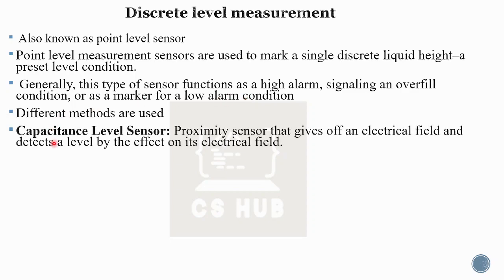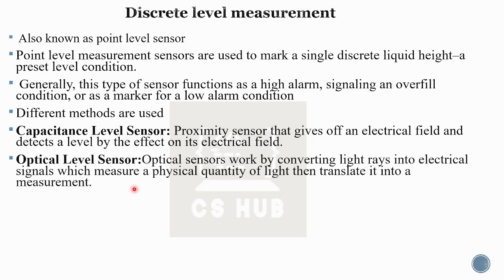For discrete measurement we can use capacitance level sensors, proximity sensors that give off an electric field and detect a level by the effects on that electrical field, and optical level sensors that convert light rays into electrical signals which measure the physical quantity of light and translate it into a measurement.